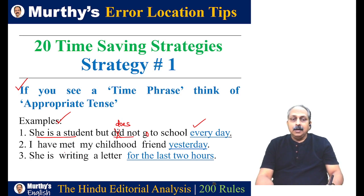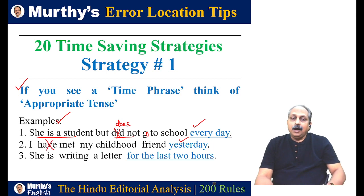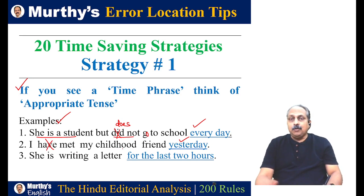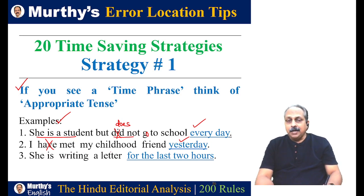Look at the second example: 'I have met my childhood friend yesterday.' What is the time phrase? Yesterday. Yesterday goes with past tense, but here the sentence is in present perfect — that's not correct. The correct form is: 'I met my childhood friend yesterday.' This is a wrong combination that has appeared in many competitive exams because it's a common error. We cannot use present perfect with a specific time that goes into the past.